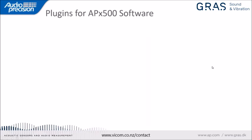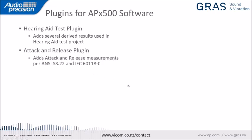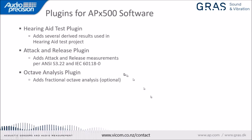For the demonstration, several APX software plugins are used. The hearing aid test plugin adds derived results used in the hearing aid test project. The attack and release plugin adds measurements per ANSI S3.22 and IEC 60118 Part 0. The octave analysis plugin adds optional fractional octave analysis useful for acoustic measurements. These are freely available downloads from ap.com — just register to download, install them, and the features appear in APX 500 software.